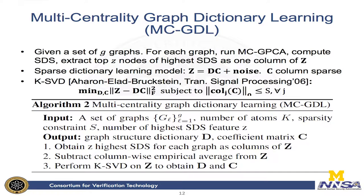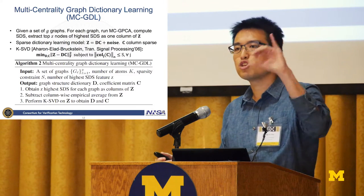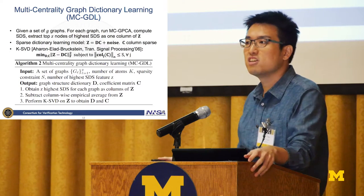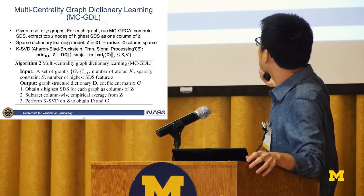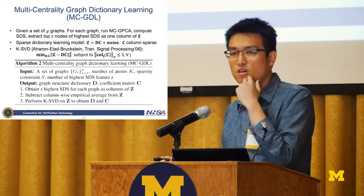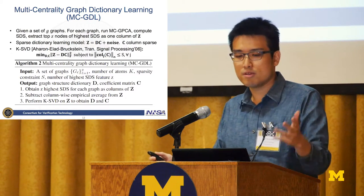We extend this work to multiple graph observations. With a set of G graphs, we run graph PCA separately on each, compute the SDS for each graph, and extract the top-Z nodes with the highest SDS scores as a feature matrix for dictionary learning. We then perform sparse dictionary learning on this matrix Z, learning a basis representation where only a few basis elements — or atoms — represent each observation, solved using the K-SVD approach.